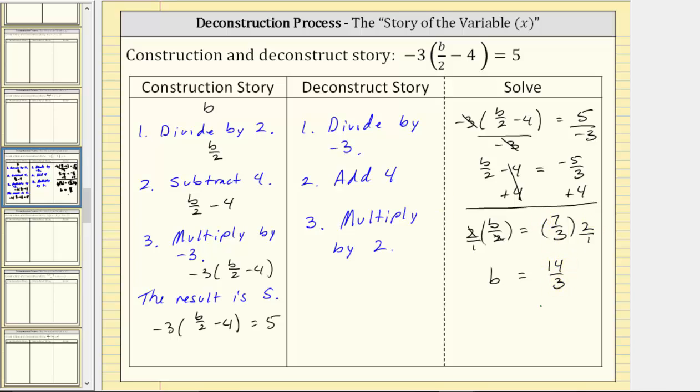So the solution to the given equation is 14-thirds. To verify this is the solution, we would need to substitute 14-thirds for B in the original equation, then simplify the left side to verify it is equal to the right side of the equation, which is five. I'll leave that check for you. I hope you found this helpful.